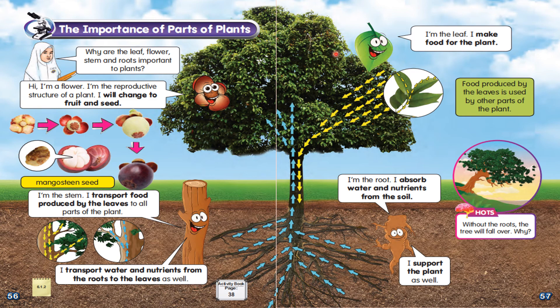Next, we go to the leaf. The leaf says: I make food for the plants. Food produced by the leaves is used by other parts of the plant.